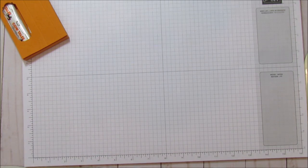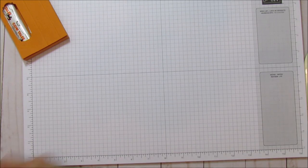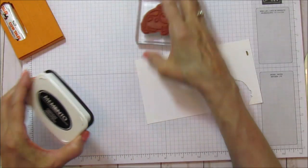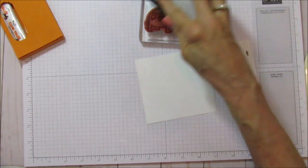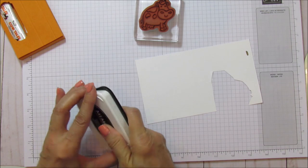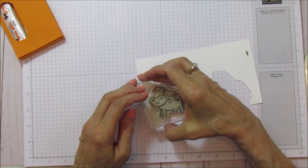All right, so now let's go ahead and stamp. We're going to get our whisper white. We're going to stamp our cow right here with memento black.